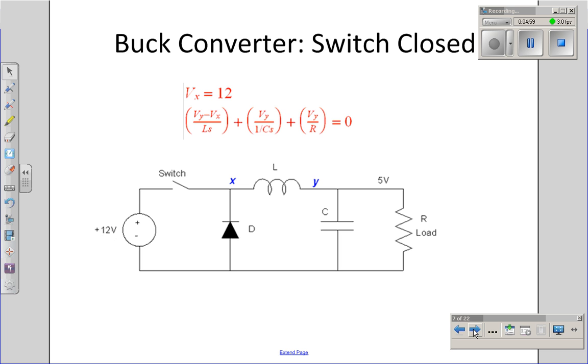To analyze a buck converter, I need to look at two cases, one where the switch is open and one where the switch is closed. To first look at the case where the switch is closed, I've got two nodes. I need to write two equations for two unknowns. The first equation is easy: Vx equals 12 volts.